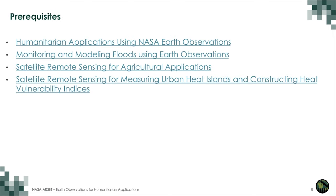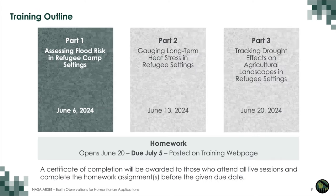Prerequisites for the three-part training are listed below, along with links to each training. Over these three weeks, from June 6th to June 20th, there will be three one-and-a-half-hour sessions which will include presentations, demonstrations, and question-and-answer sessions. All materials, code, and recordings from each session will be available from the training webpage. A recording will be made available within 48 hours of the training day on the ARSET website if you are not able to attend one part. Homework opens on June 20th and will be due on July 5th, accessible from the training page on the last day of training.